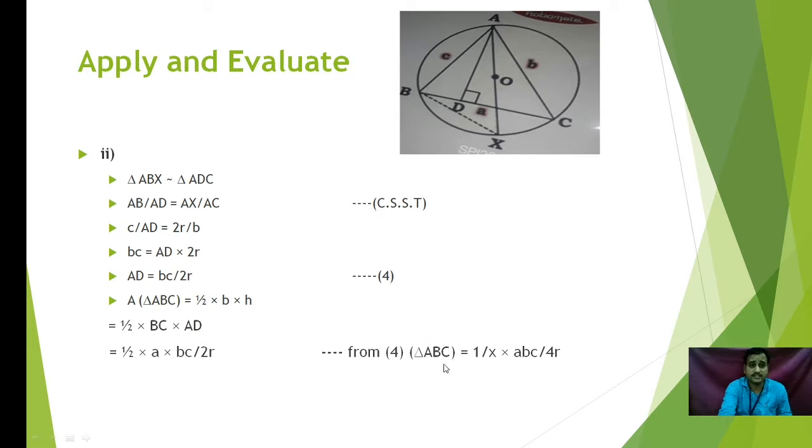Now, when two triangles are similar, we know that their corresponding sides are in proportion. Therefore, when triangle ABX is similar to triangle ADC, we can say that AB upon AD is equal to AX upon AC. AB is C. AD as it is. AX is diameter, which is two times radius. AC is B. Now, BC is equal to AD times 2R by cross multiplication. AD is equal to BC upon 2R.